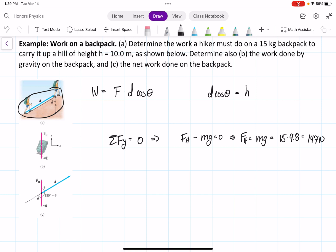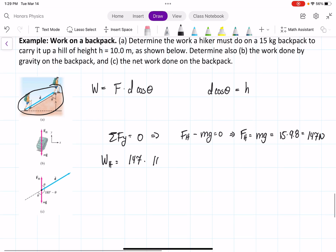So if we want to find the work done, the work that the hiker must do, we know that the work for the hiker is equal to the force, which is 147 newtons, times d cosine theta. But we said d cosine theta equals the height, which we know is 10 meters, so we get 1470 joules.